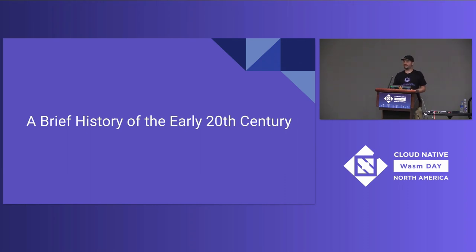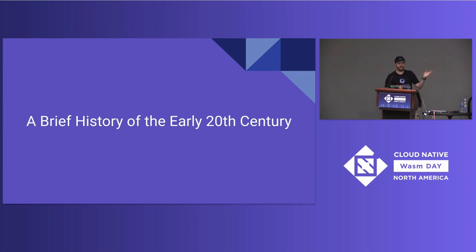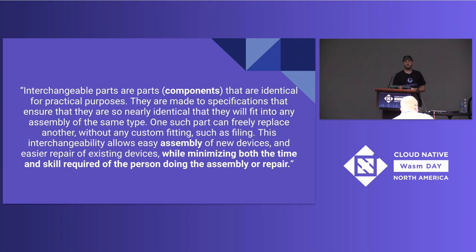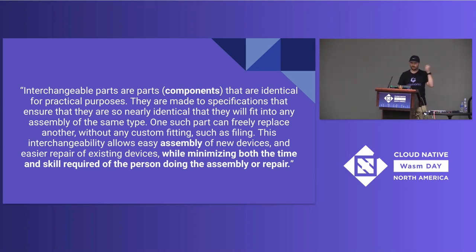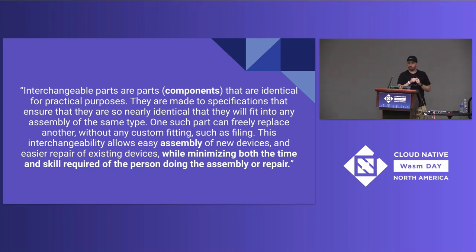At the very beginning of the 20th century in the United States, two important manufacturing concepts merged together: the assembly line and the idea of interchangeable parts. This is the definition of interchangeable parts directly from Wikipedia — I did not doctor this to include words like 'components' and 'assembly.' They are parts or components that are identical for practical purposes, made to very specific specifications, allowing easy assembly of new devices and easier repair of existing ones, minimizing both the time and skill required of the person doing the repairing or assembling.